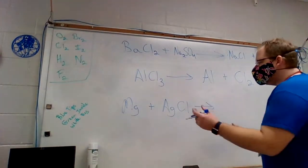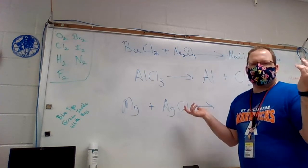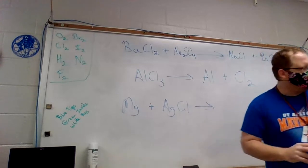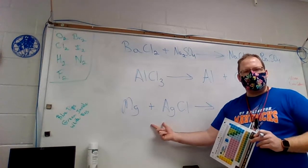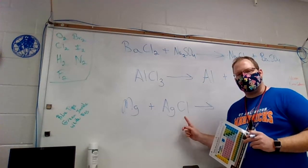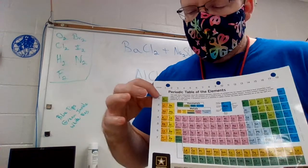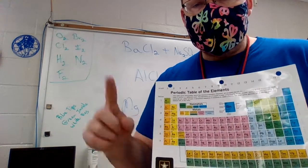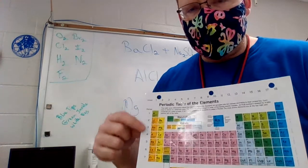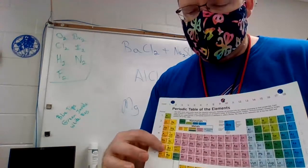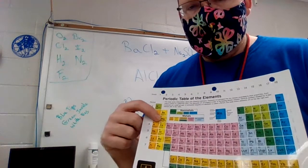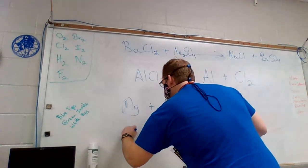So two of these chemicals are going to switch places. To figure out which ones, I need to get the charges. What is the charge for magnesium, silver, and chlorine? Magnesium is in the second column of the periodic table, so it's going to be a plus two charge. Everything in the first column is plus one because they give up one electron; the second column is plus two because they give up two electrons. So magnesium is plus two.